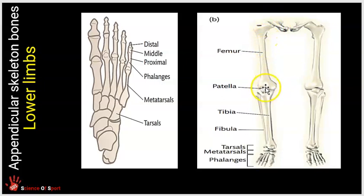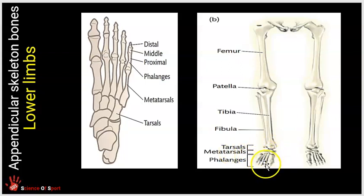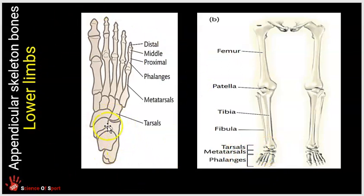The femur connects with the lower limbs at the knee joint. The tibia is the large shin bone and the main bone of the lower leg; the fibula is the smaller bone running parallel to it. The patella is a sesamoid bone in the knee joint that provides protection. The ankle is formed by the tarsals, the main part of the foot by the metatarsals, and the toes are the phalanges.